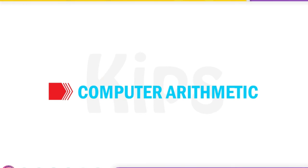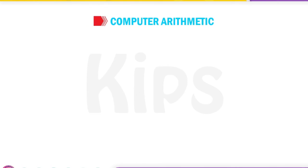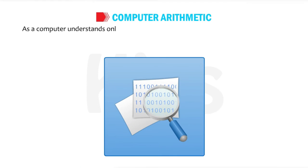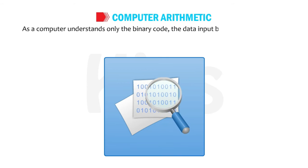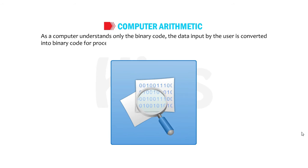Let us now find out what computer arithmetic is. As a computer understands only the binary code, the data input by the user is converted into binary code for processing.